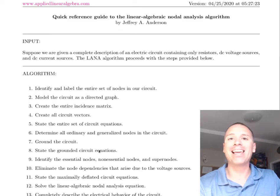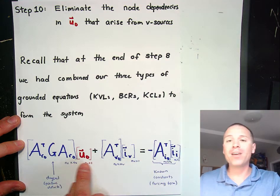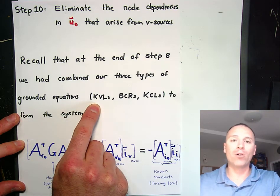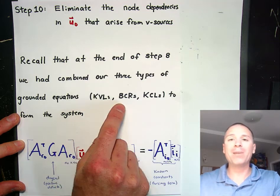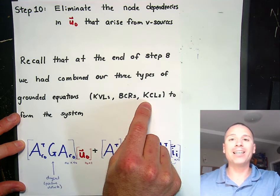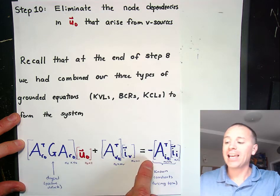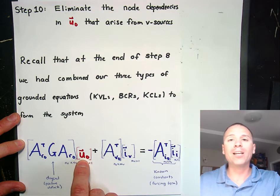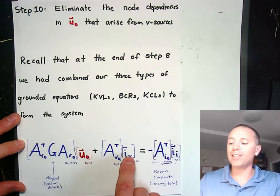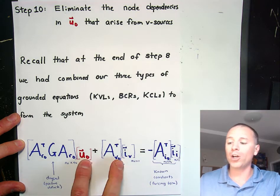That was the end of step eight. That modified nodal analysis linear systems problem partially came from a system of equations where we combined the Kirchhoff's voltage laws in grounded and node potential form with the BCRs — in other words Ohm's law — that's where that matrix came from, and then the grounded KCLs. In other words, we stated all of the circuit equations in terms of unknown node potentials with some extra information about the currents running through the voltage sources. The problem is that this is an unknown — we haven't studied in linear algebra a system where we have two unknowns and two separate matrices.